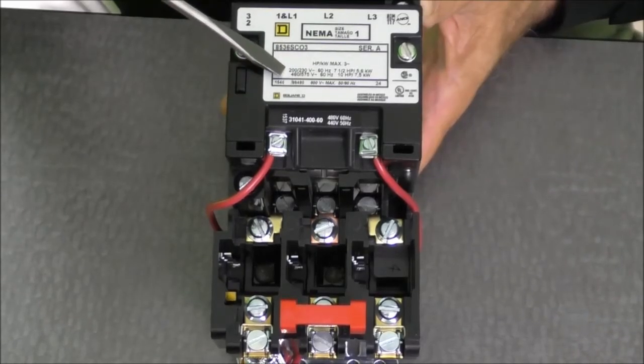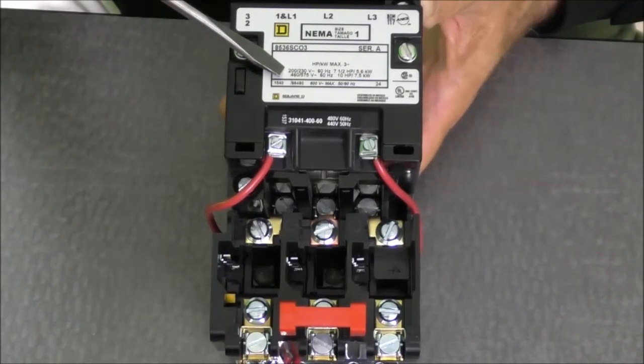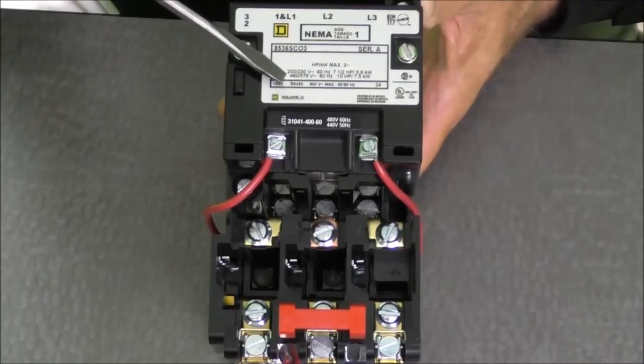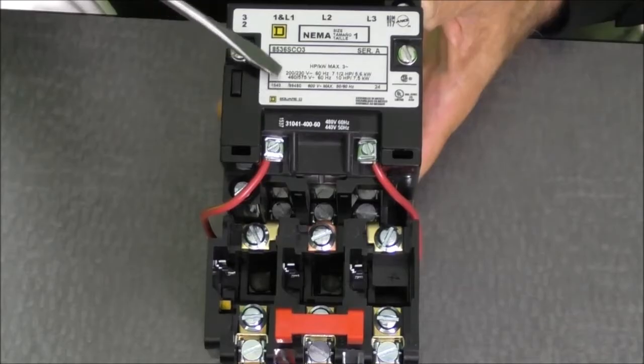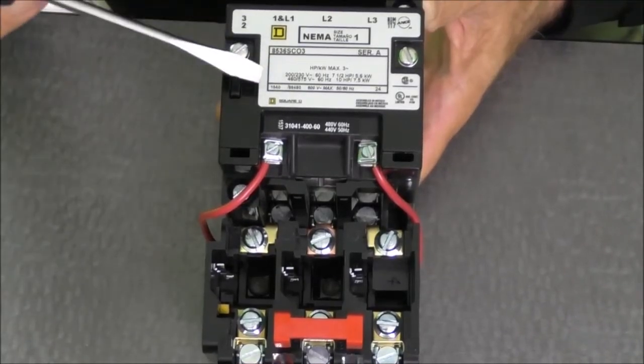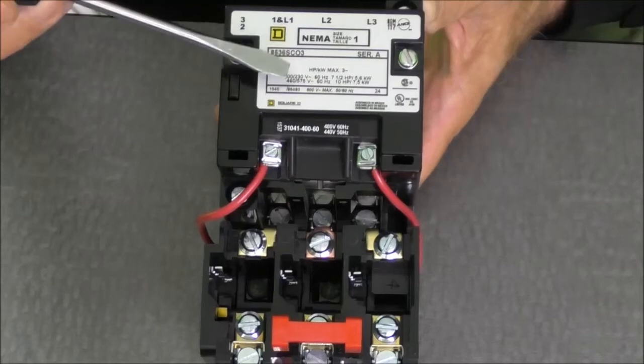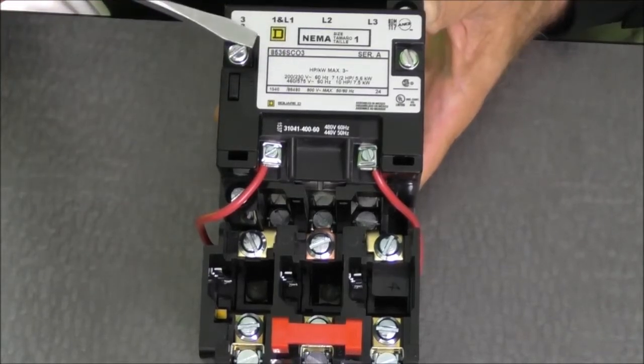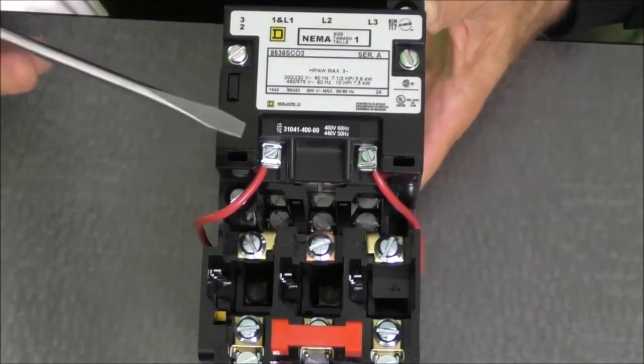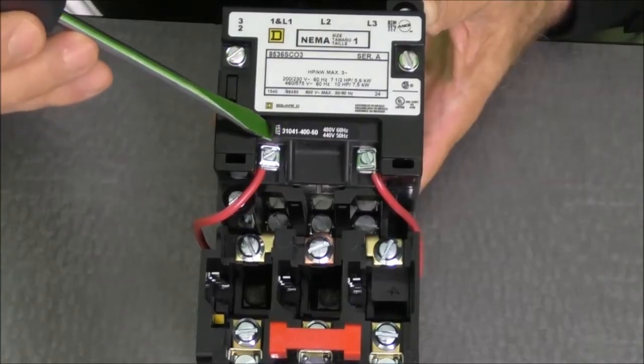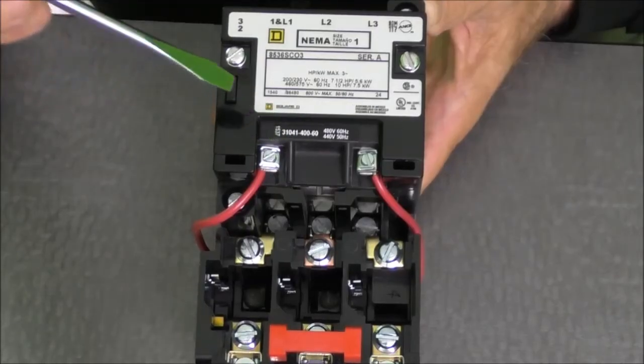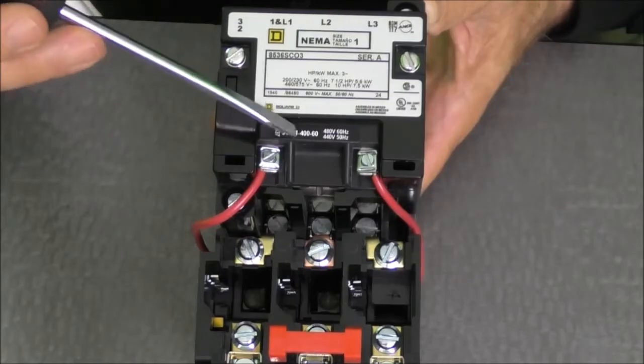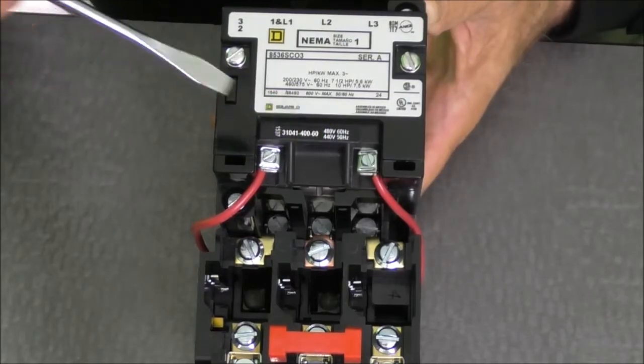Here we have our horsepower ratings. For 230 volt we have 7.5 horsepower. For 460 volt we have 10 horsepower. All NEMA rated size 1 starters will have exactly the same horsepower ratings. The interesting thing about this nameplate, there is no reference to a coil voltage. This particular starter has a 480 volt coil and we can see that by the label on the coil itself. It tells us that it's a 480 volt coil.